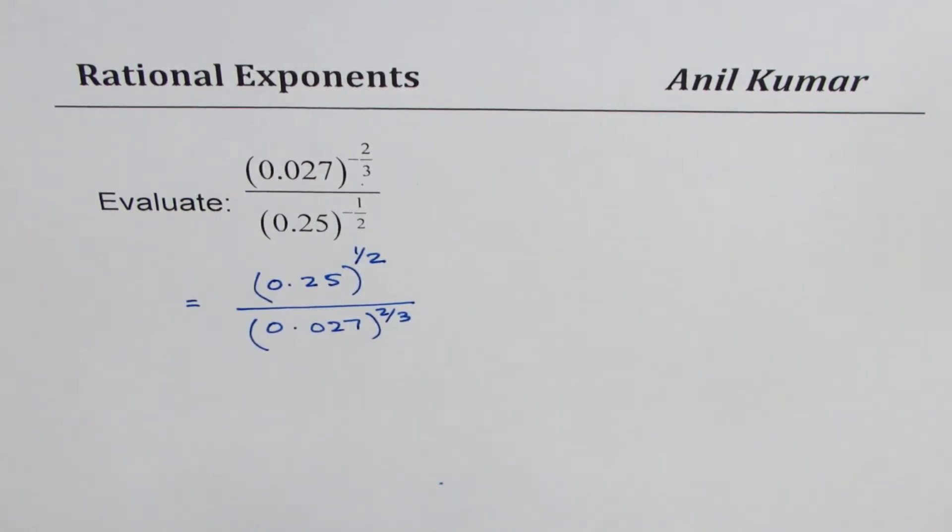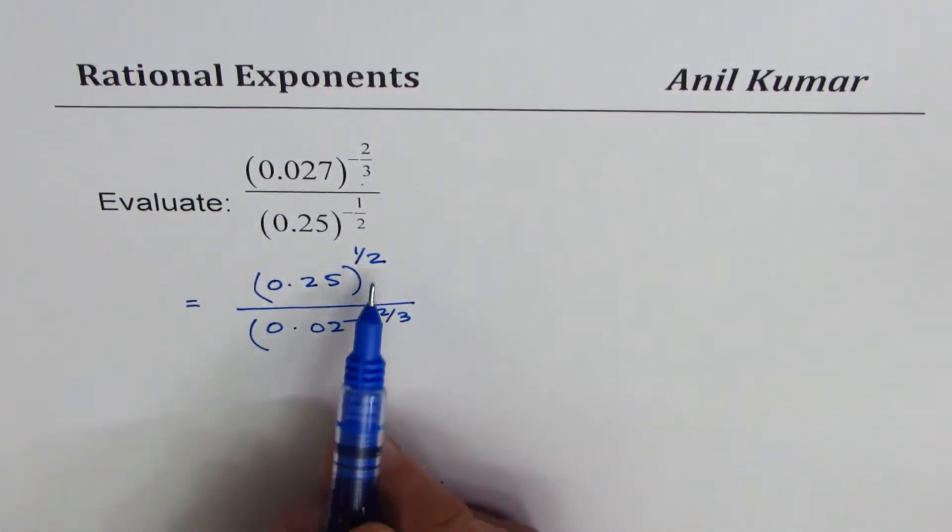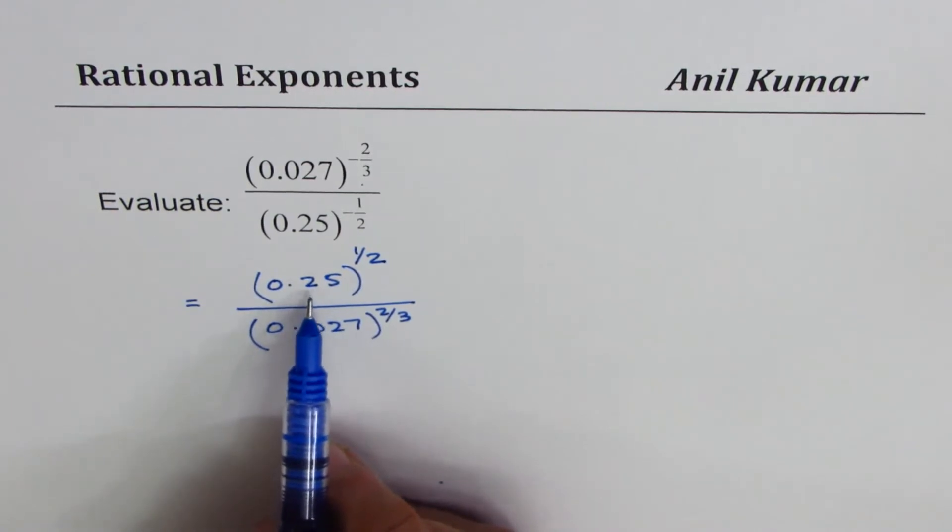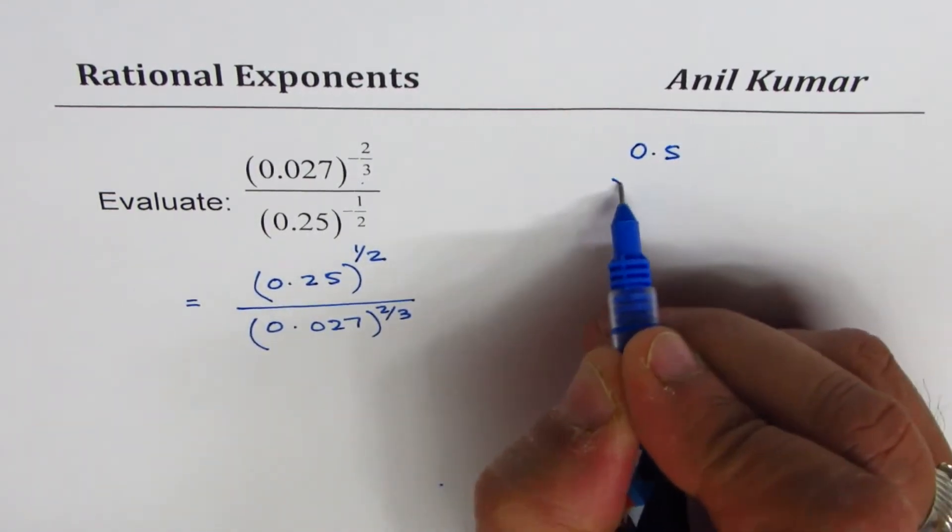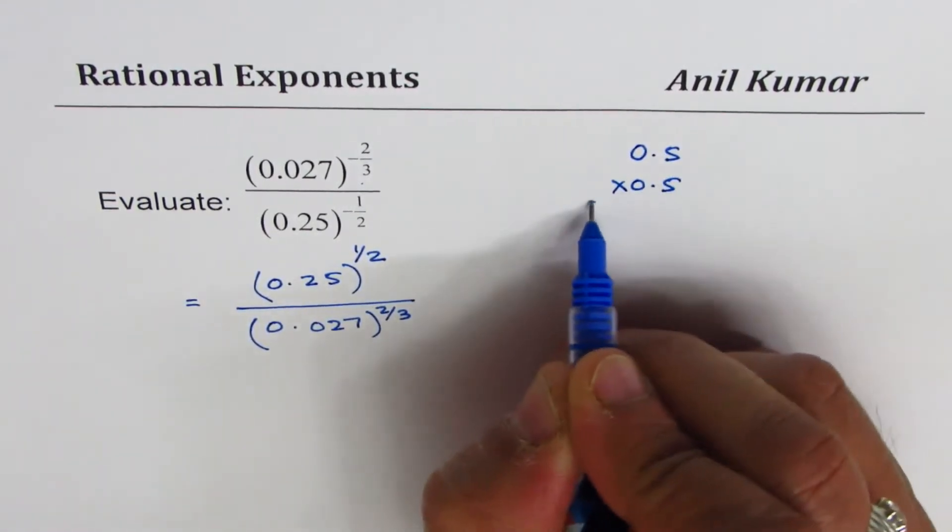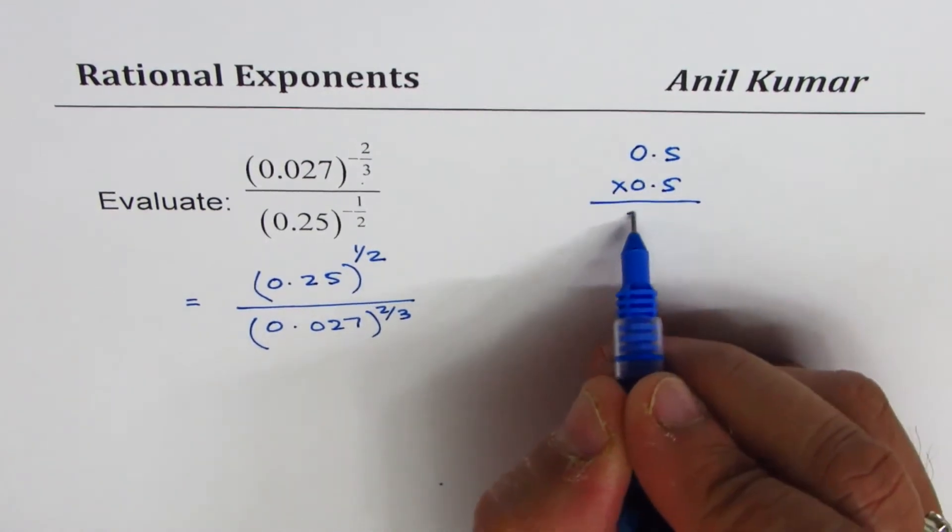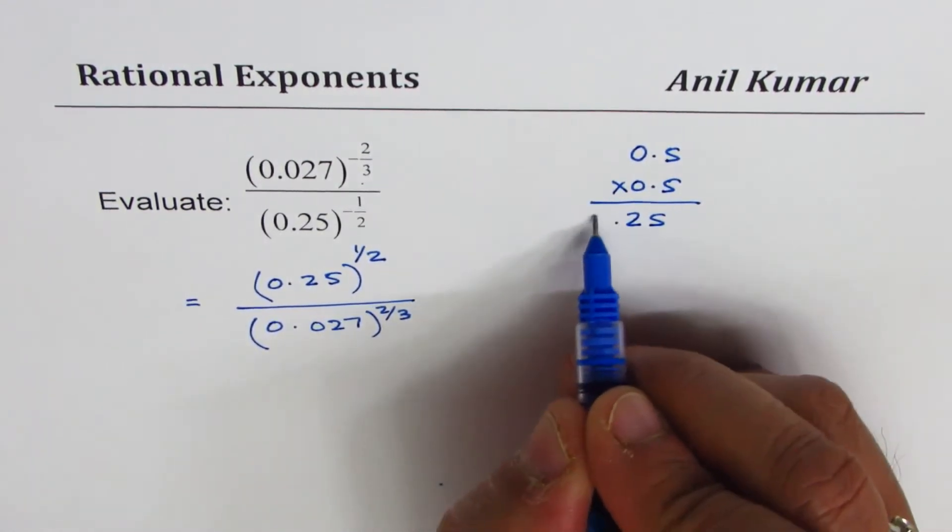I hope this step is clear. Now what is square root of 0.25? If it is 0.5 times 0.5, you get 5 times 5 is 25. Since there are two decimal places, you get 0.25, so square root of 0.25 is 0.5.